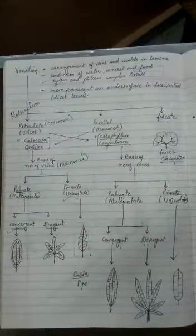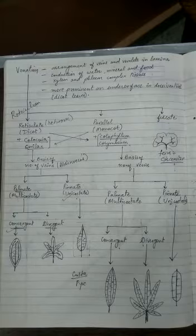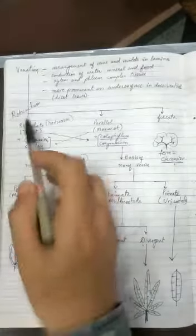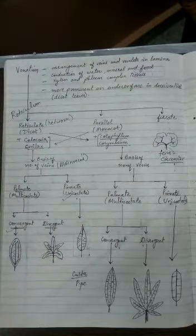How will you define reticulate venation? The venation which arises from the midrib or the main vein branch and then again branch to different degrees to form a reticulum. When it forms a network of reticulum, it is called as reticulate venation.